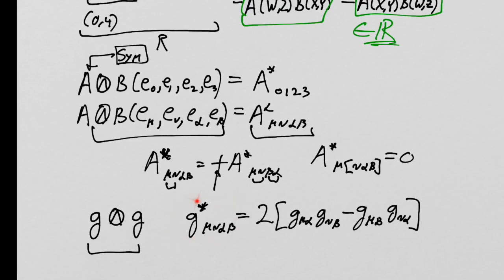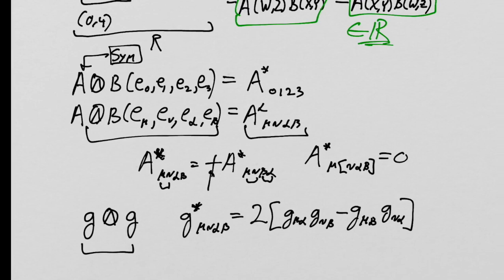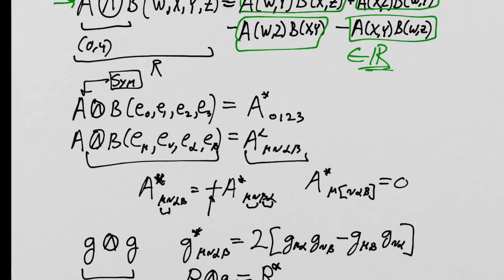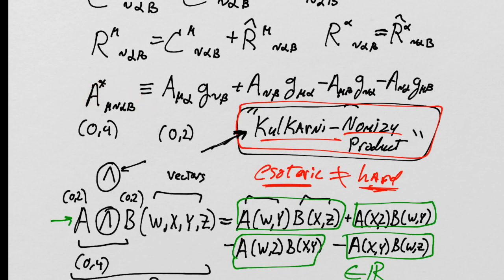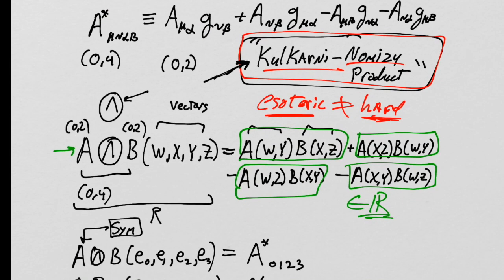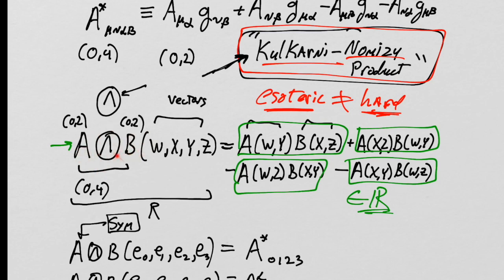This is a guaranteed tensor you can create that shares all the symmetries of the Riemann tensor. The other product we want is the Kulkarni-Nomizu product of the Ricci tensor R with the metric G, which we define as R-star. Note that A-star as I've defined it refers to the Kulkarni-Nomizu product of a (0,2) tensor with the metric specifically — that's what the star notation means in my convention.